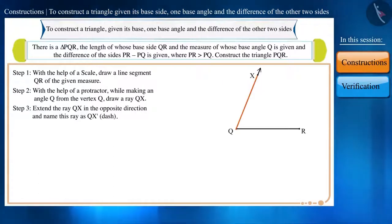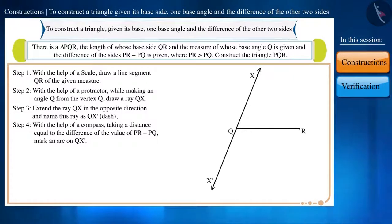We will now extend QX in the opposite direction and name this ray as QX dash. Step 4: With the help of a compass, taking a distance equal to the difference of the value of PR minus PQ, mark an arc on QX dash.